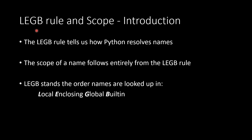Today I want to talk about the LEGB rule and the concept of scope in Python. The LEGB rule tells us how Python resolves names — whenever we use a name in an expression, Python needs to find out what value is associated with that name. LEGB stands for the order names are looked up: local, enclosing, global, and built-in. Those are the namespaces that Python searches in order.